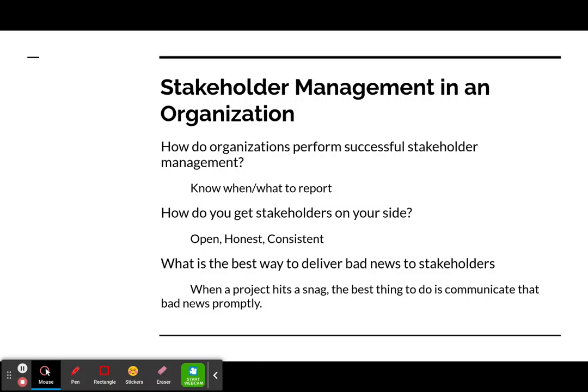How do you get your stakeholders on your side? Just like any other team member, you need to be open, honest, and consistent with them. The best way to deliver bad news is right away — you do not want to keep them waiting when there is a snag in the project, and you want to be open, honest, and transparent when delivering that information.